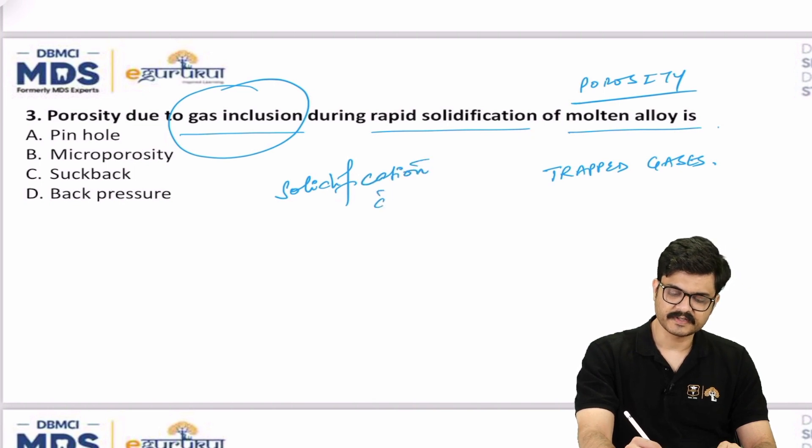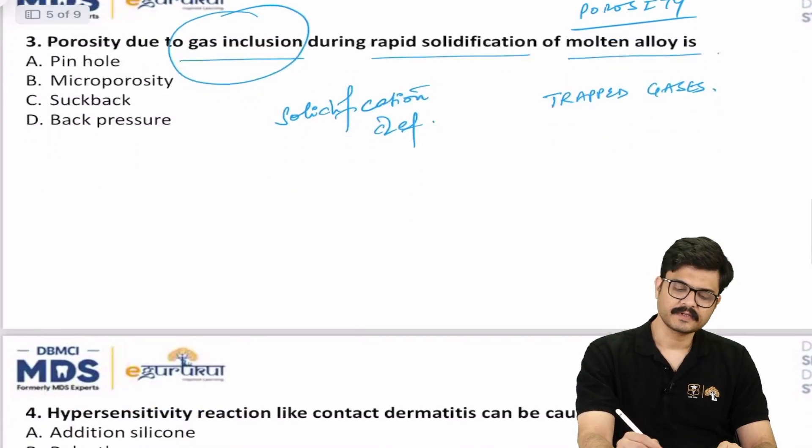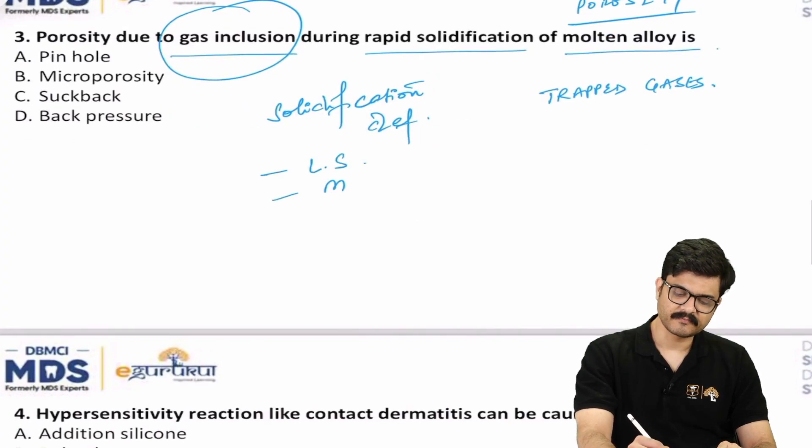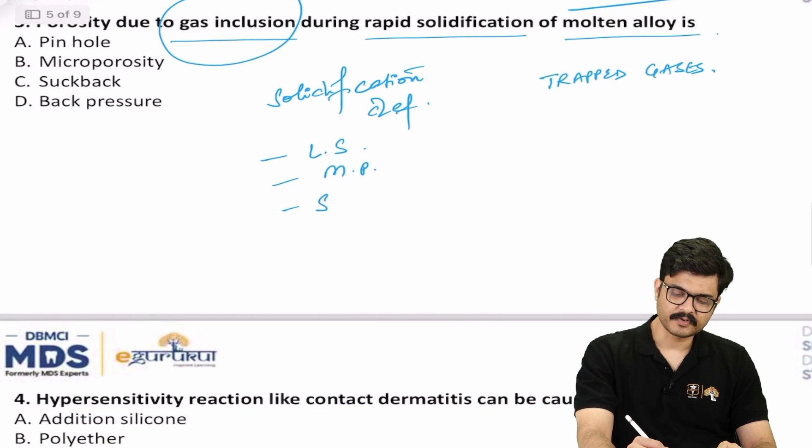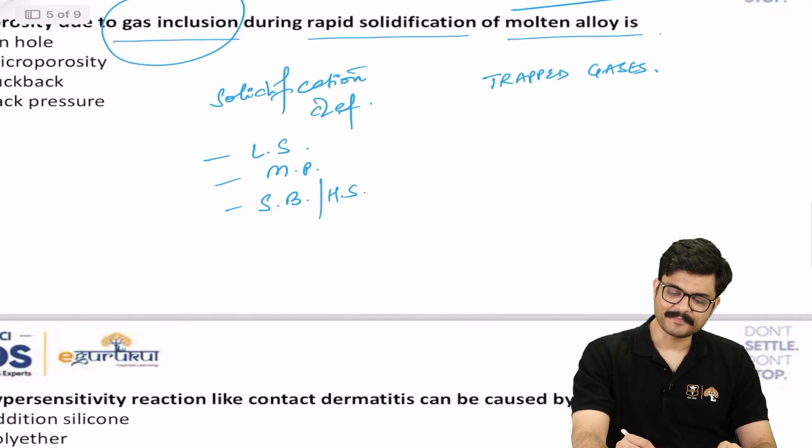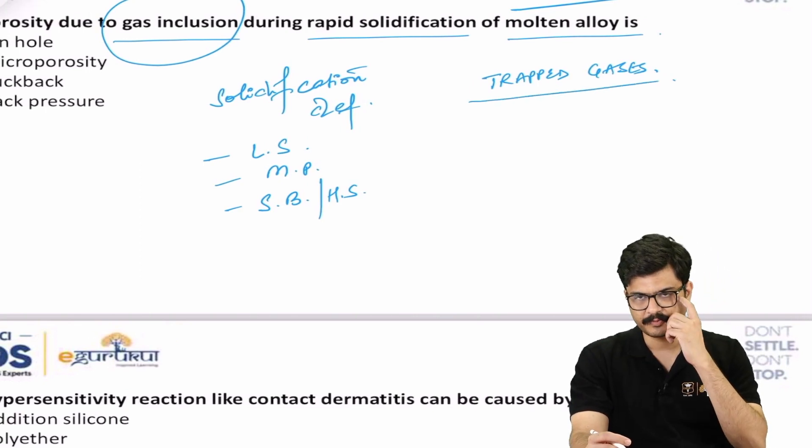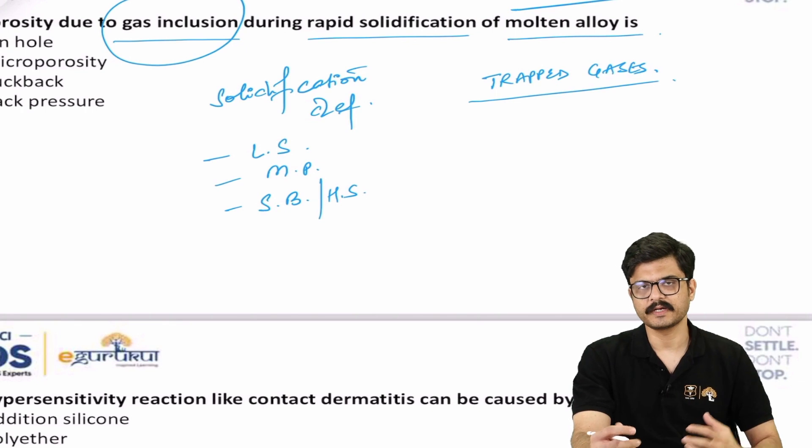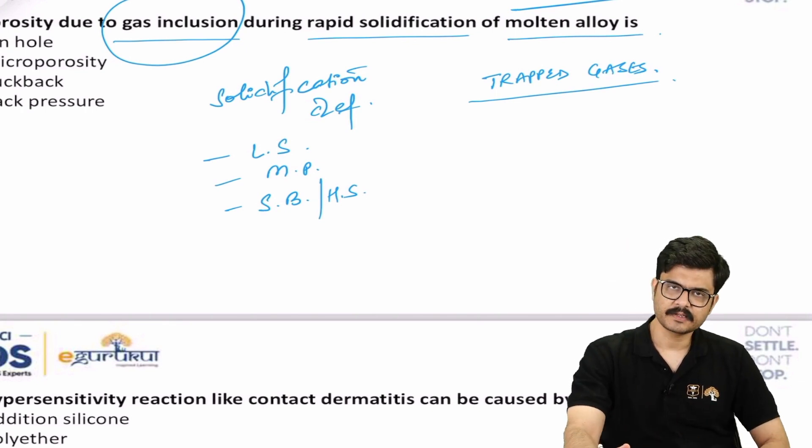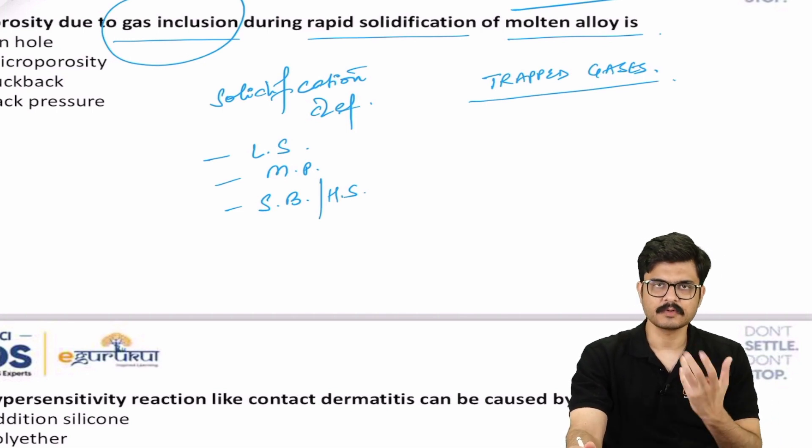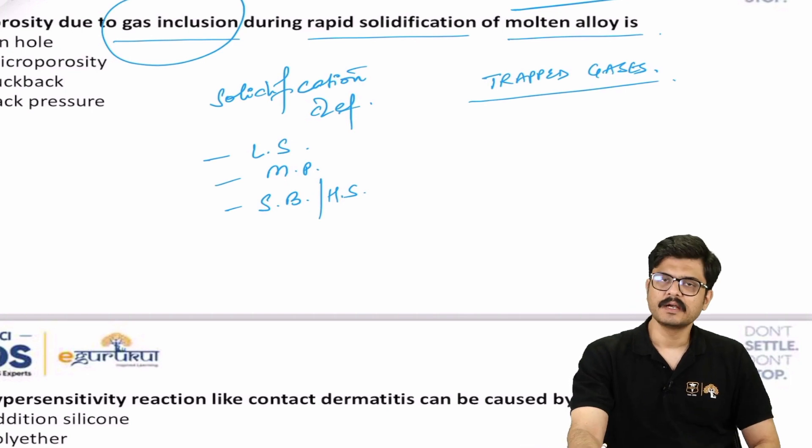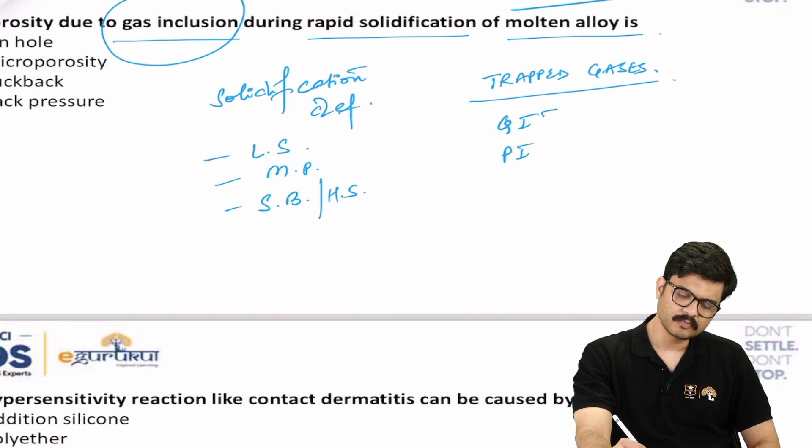In that you would have localized shrinkage porosity, you will have micro porosity, and you will have suckback porosity or also known as hot spot porosity. The other is due to trapped gases, and this is the propensity of molten alloy to incorporate gases during melting, and then when they solidify, when they're coming back to the room temperature, they're going to evolve these absorbed gases leading to porosity.